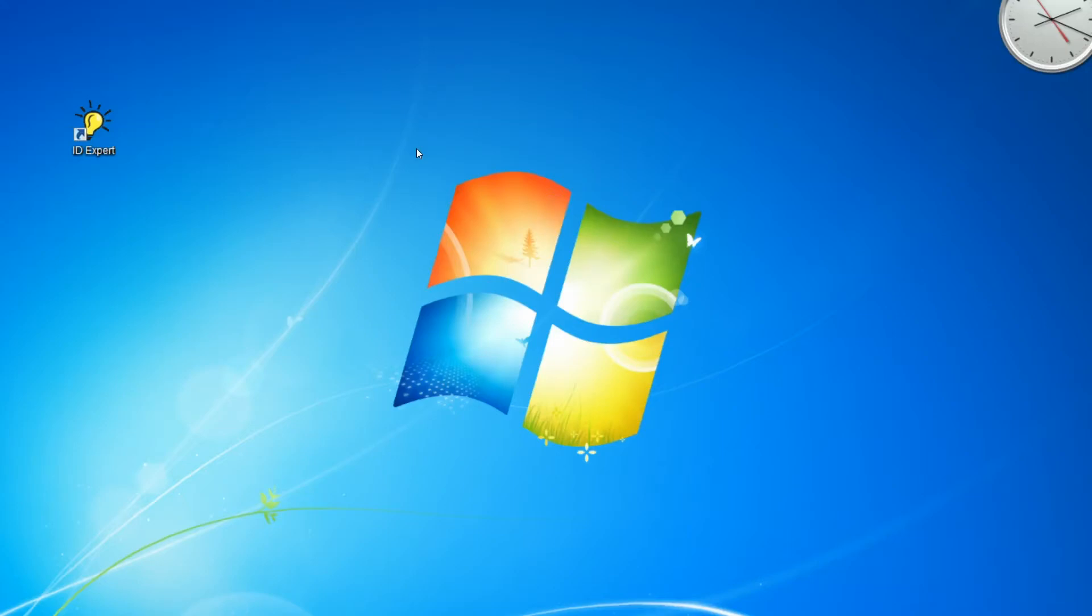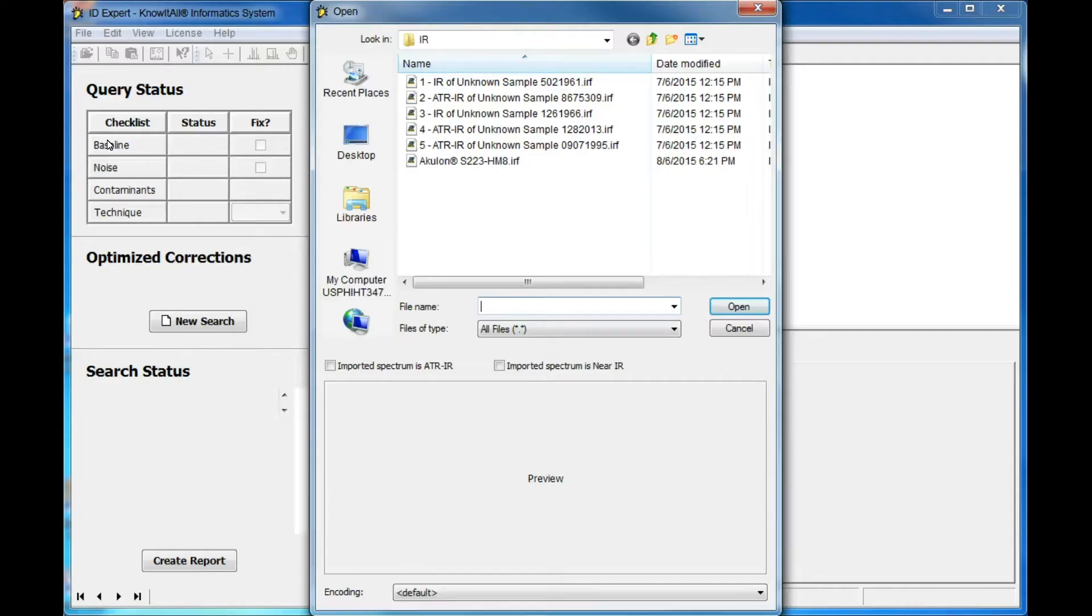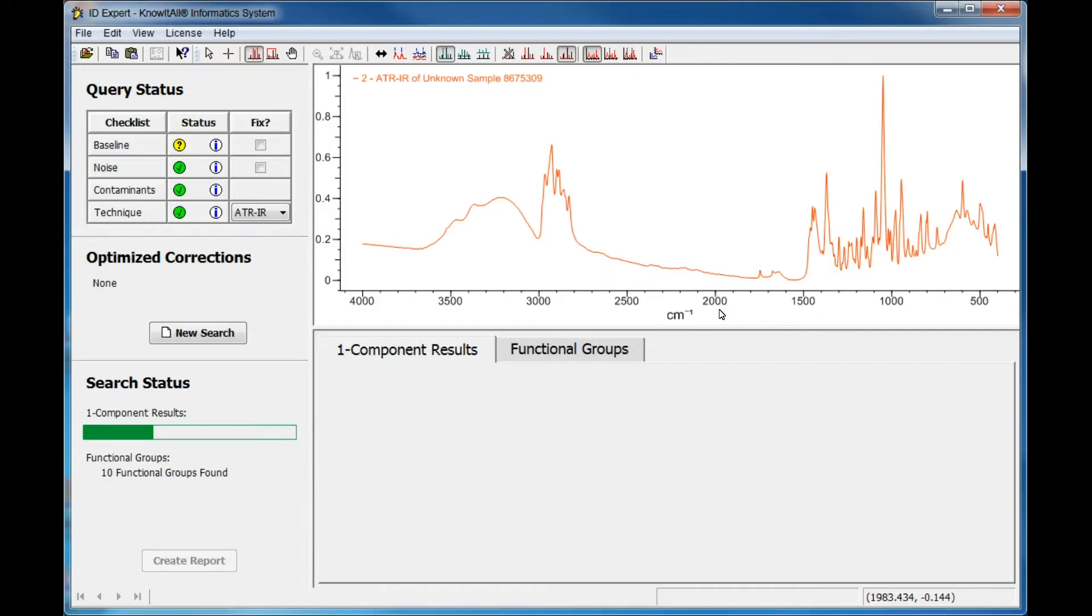Now we'll show you how it works. Let's begin. Open your unknown spectrum and the analysis begins automatically. Know-It-All has identified a problem with the query spectrum's baseline and suggests we fix it.